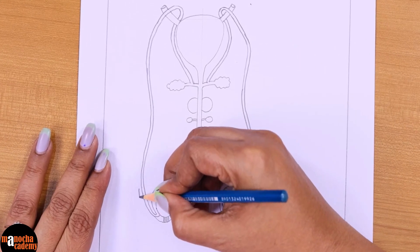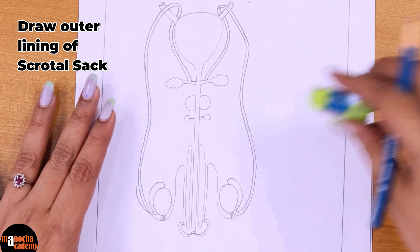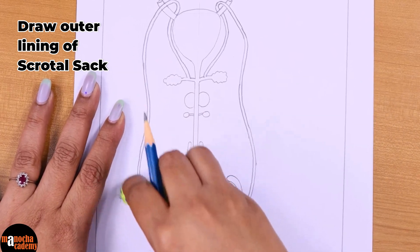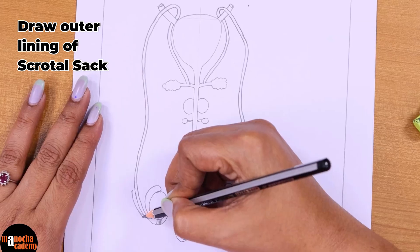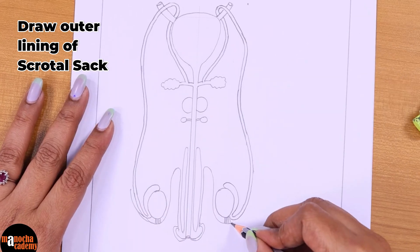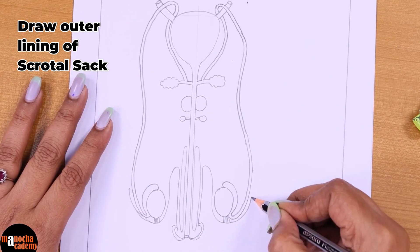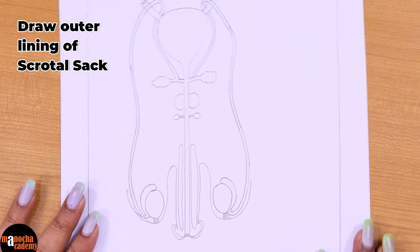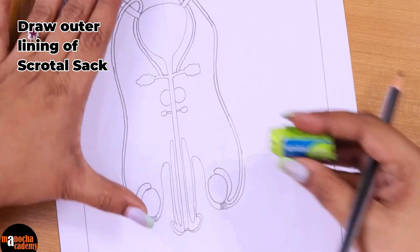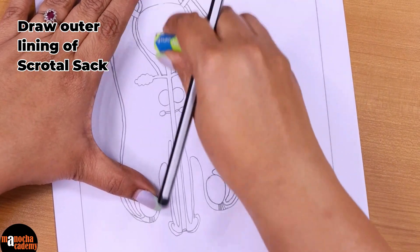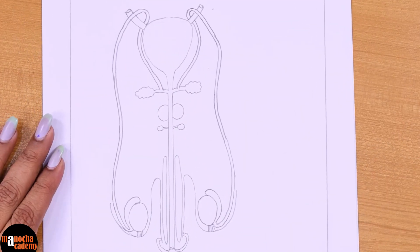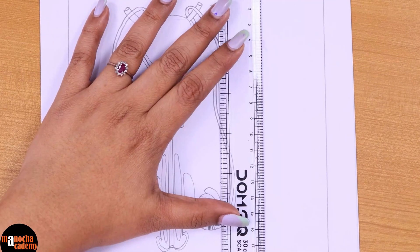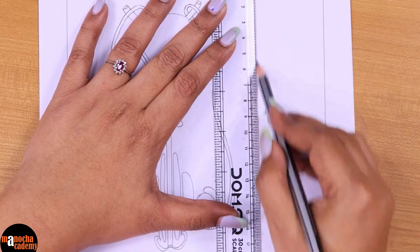We have more or less drawn everything except the outer lining of the scrotal sac. The scrotal sac now will continue and this is done. I will erase the reference lines and that is how you draw the diagram of the male reproductive system. Now let us label.